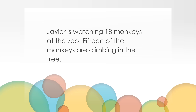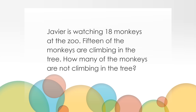You are working hard to make sense of this story. We have some more new information. Let's read it again. Javier is watching 18 monkeys at the zoo. 15 of the monkeys are climbing in the tree. Can you find the new information? How does this change our story? Can you think of a question we can ask about our story? Let's read the story one last time and listen for the question that's been added at the end. Javier is watching 18 monkeys at the zoo. 15 of the monkeys are climbing in the tree. How many of the monkeys are not climbing in the tree? Are you thinking about how you might solve this problem? Would you use addition or subtraction? Why did you pick that one?